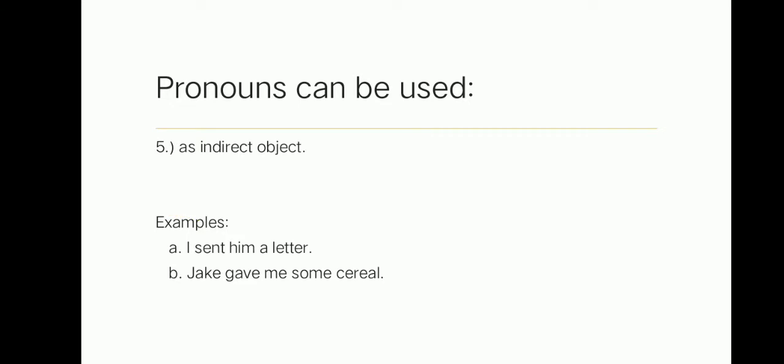Pronouns can be used as indirect objects. When we say indirect object, it is the recipient of the direct object. For example, I sent him a letter. Him is the indirect object of the verb sent, which is the recipient of a letter, and a letter is the direct object. Another example: She gave me a gift. Me is the indirect object of the verb gave, which is the recipient of the gift, and the gift is the direct object. Okay, let's proceed to the next.